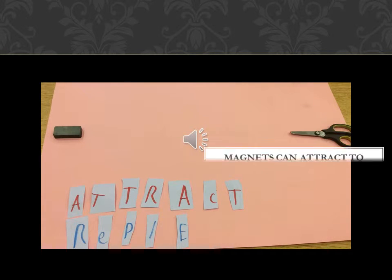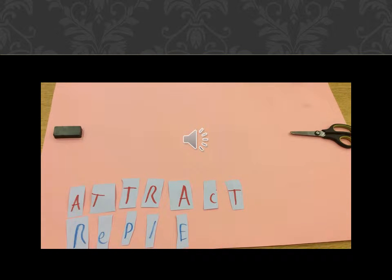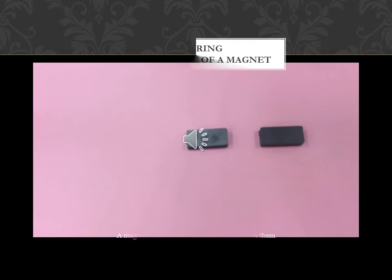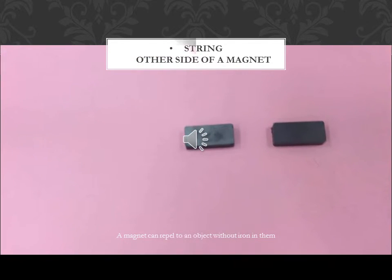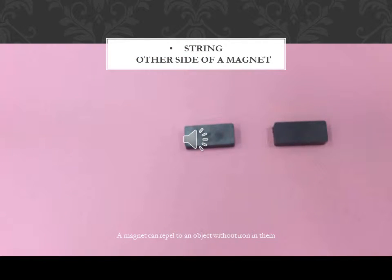Magnets can attract to scissors and other objects with iron in them. A magnet can repel objects without iron in them. It cannot attract to a string.